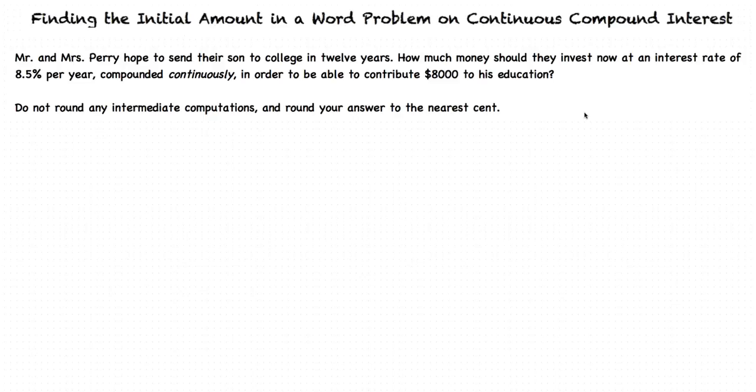Let's take a look at an example. Mr. and Mrs. Perry hope to send their son to college in 12 years. How much money should they invest now at an interest rate of 8.5% per year, compounded continuously, in order to be able to contribute $8,000 to his education?